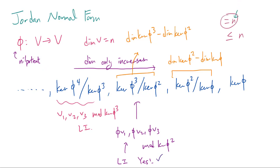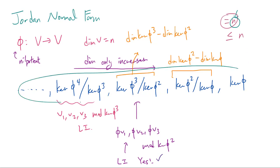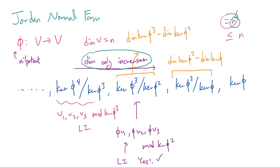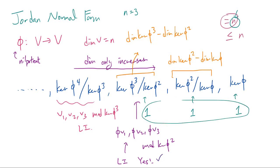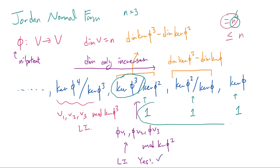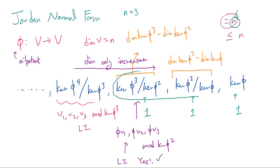Now, how are we going to distribute these N dimensions among these spaces? Since the dimension has to increase or stay the same as you move to the right, for example if N equals 3, the longest possible sequence is when the dimension of each quotient space is 1. But in particular, something to realize is that by the time you get kernel of phi to the Nth power modded by kernel of phi to the N minus 1, you are going to have used up all of your dimensions.